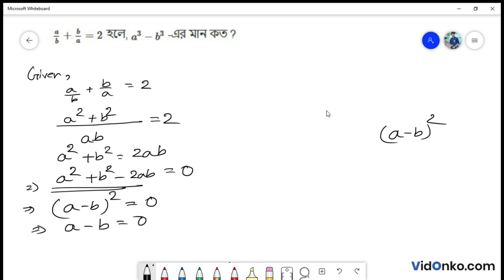We found the value of a minus b. Now we need to find a³ minus b³. So we will find a³ minus b³.